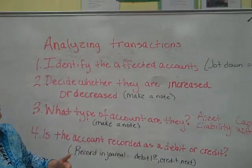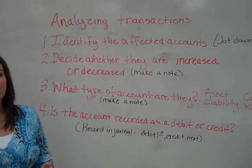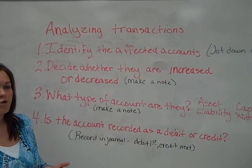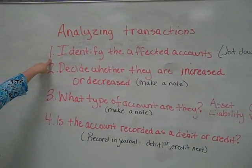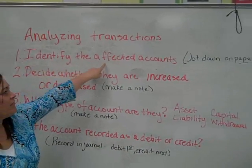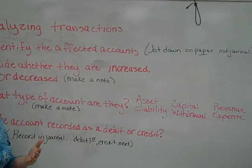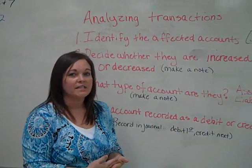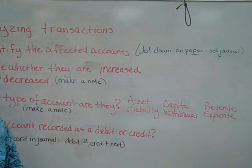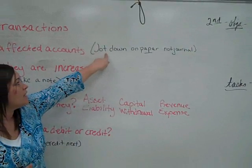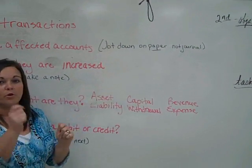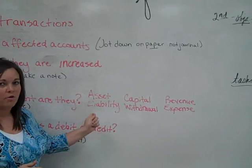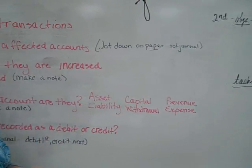These are the steps you need to go through when you analyze a transaction to decide what goes in the journal. The first thing you need to do is identify the affected accounts. You take the transaction, you read it, and you decide what accounts are affected by what happened. Jot those down on a piece of paper — don't go ahead and write them in the journal because you have several other steps to go through.